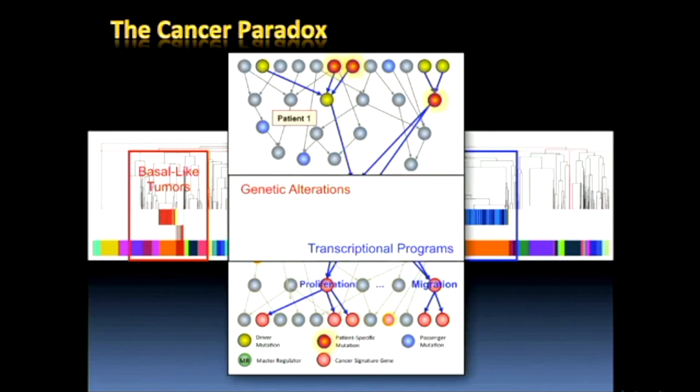The paradox is very simple: how is it possible that something as heterogeneous as the mutational landscape of basal or luminal breast cancer can give you transcriptional programs that are so similar? In triple negative breast cancer, which largely overlaps with the basal subtype, literally no two patients are identical in terms of their mutations. So how can we reconcile the top half of this diagram where all the mutations live with the bottom part where all the programs necessary for tumor maintenance live?